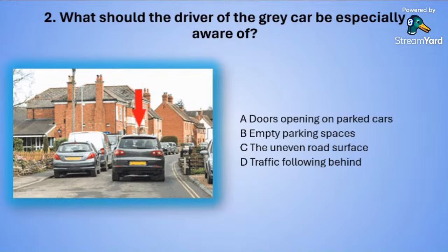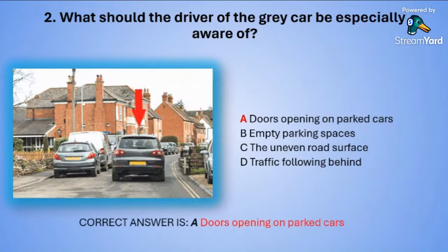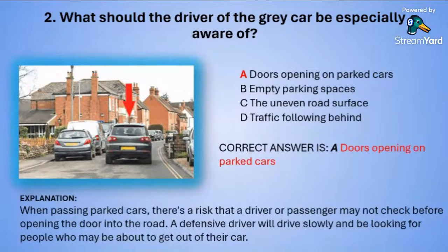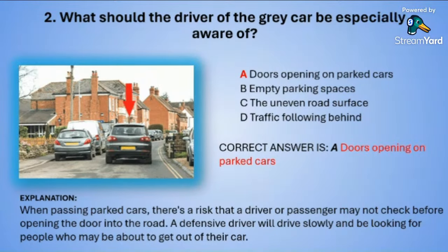The correct answer is A — doors opening on parked cars. When you pass parked cars there is a risk that the driver or a passenger may not check before they open the door into the road. A defensive driver will drive slowly and be looking for people who may be about to get out of their car.